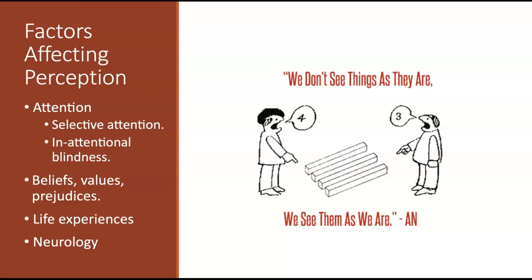A few more factors affect our perception. The first is attention — what you are attending to influences whether you perceive something. Selective attention is where we attend to a certain stimulus and filter out everything else that's irrelevant. The cocktail party effect is an example: even though there's a whole bunch of background noise at a party, you can selectively attend to the conversation you are having and block everything else out. You will perceive whatever you're attending to and not perceive things you aren't. This links to inattentional blindness — when we are selectively attending to something, we become blind to things around us. You can be staring directly at something and not see it because you're selectively attending to something else.